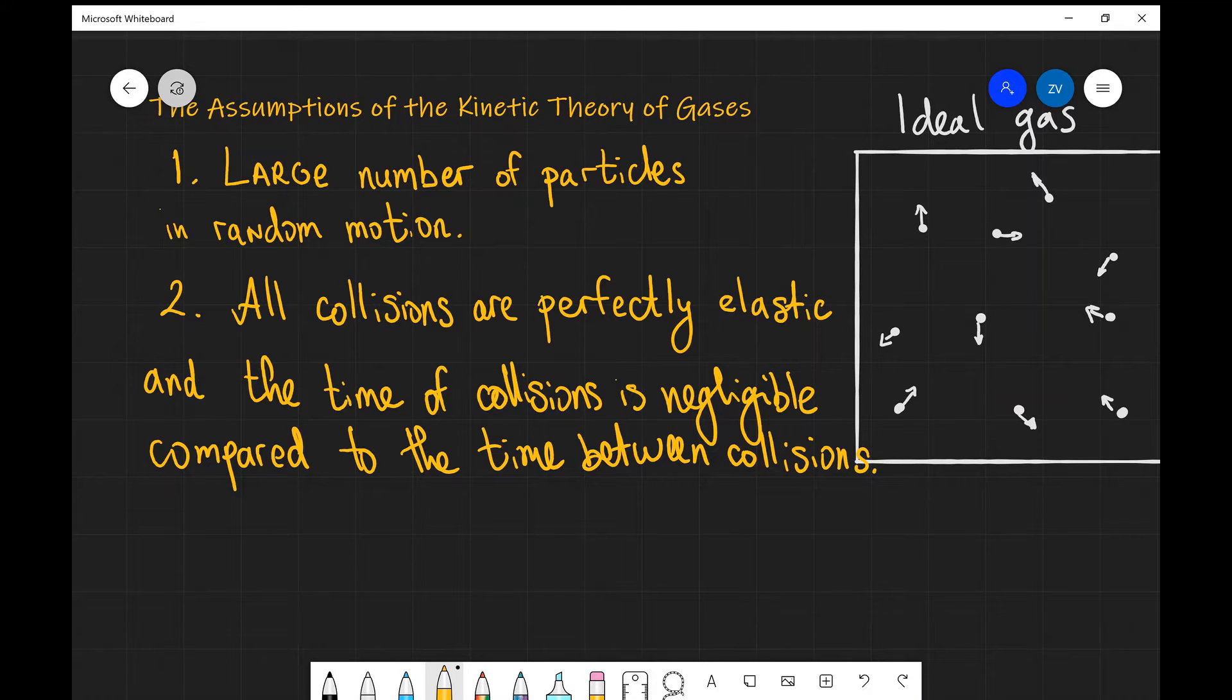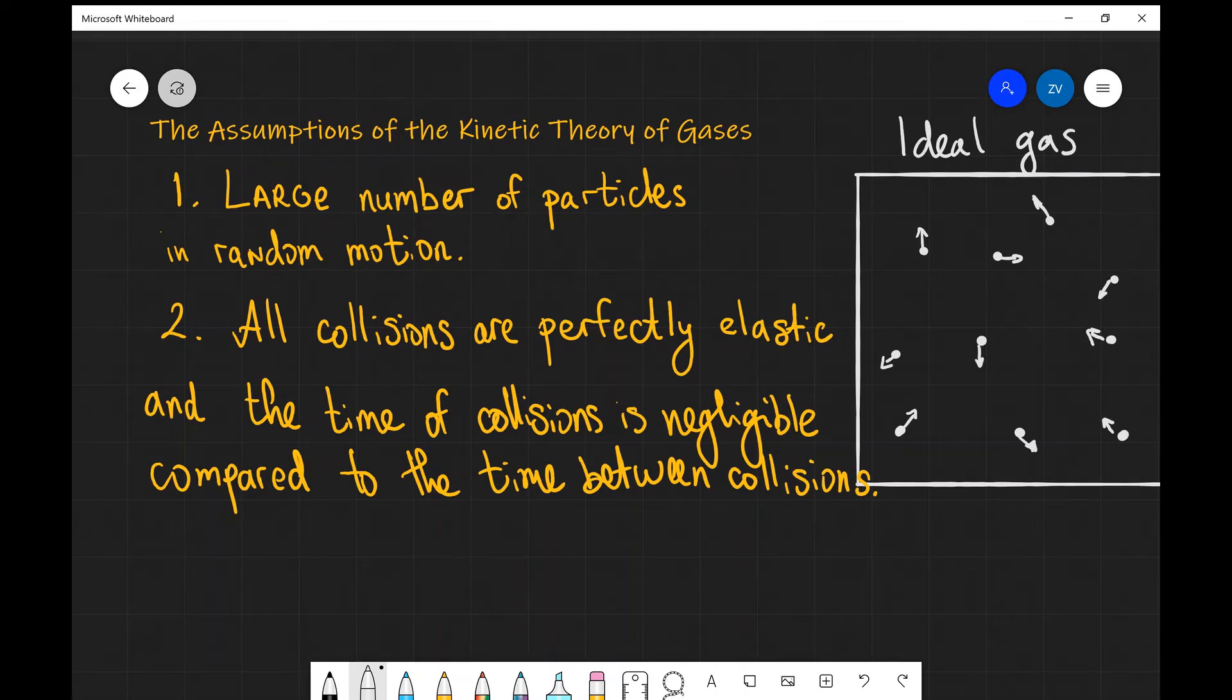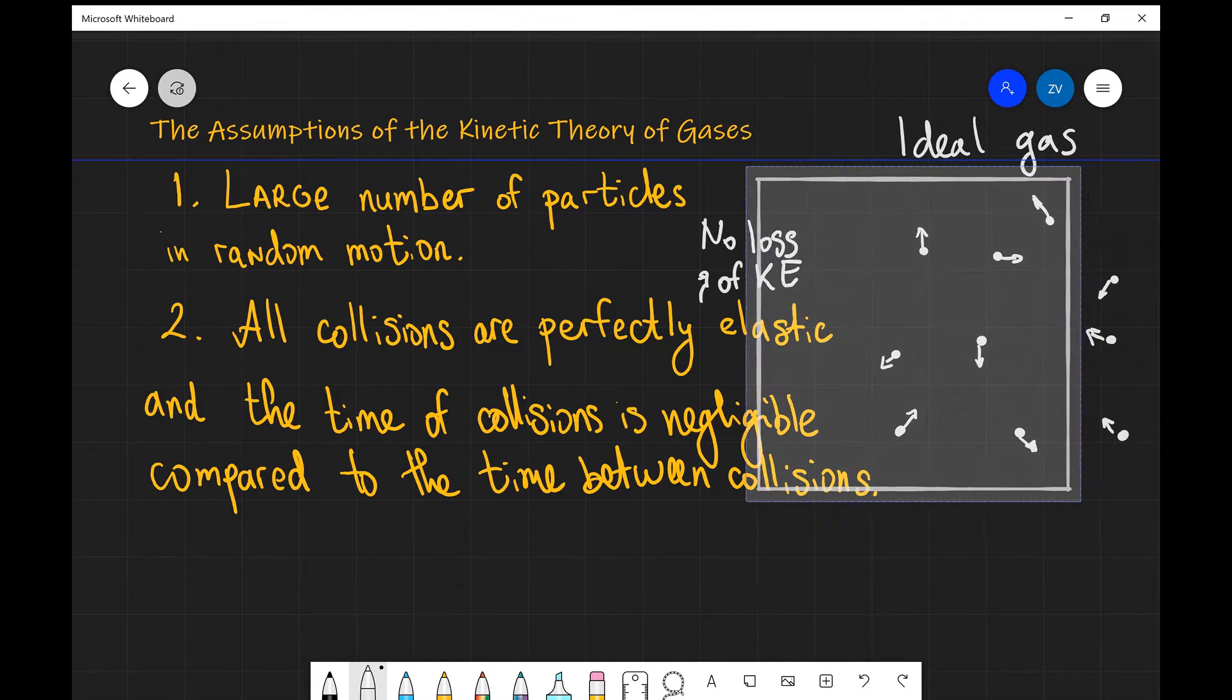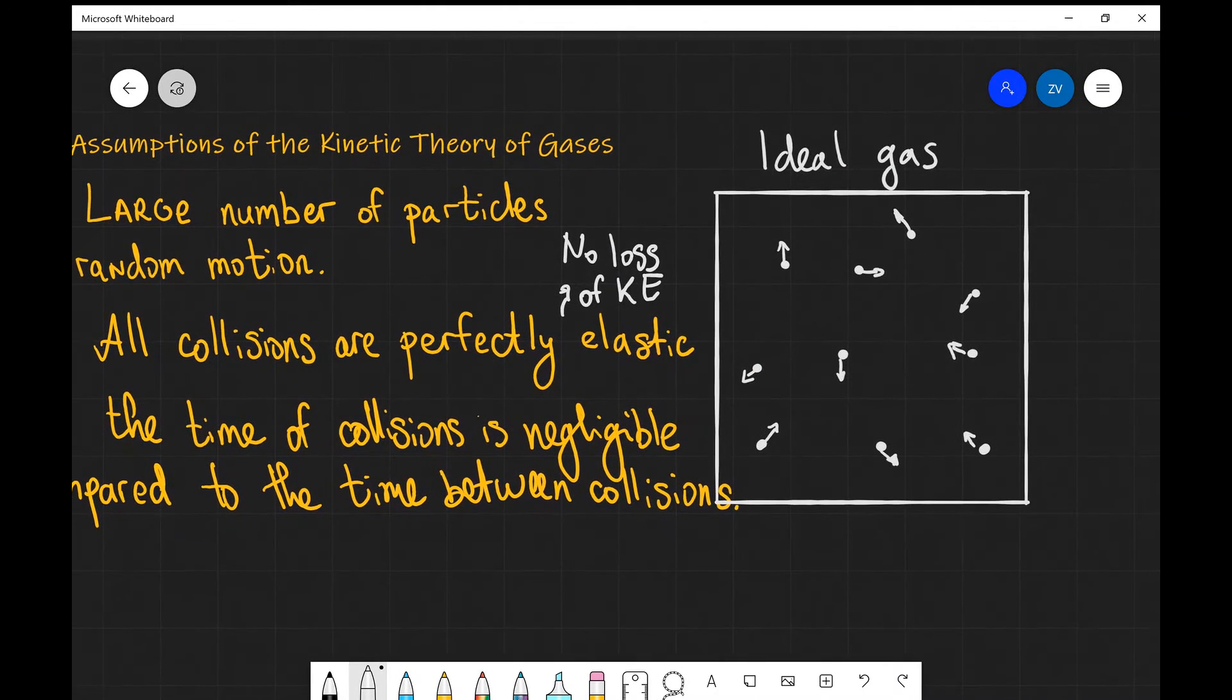The second assumption of the kinetic theory of gases is that all collisions are perfectly elastic. If we remember, perfectly elastic from mechanics means that there's no loss of kinetic energy. That means that the energy of those individual particles, the kinetic energy, remains unchanged during collisions.